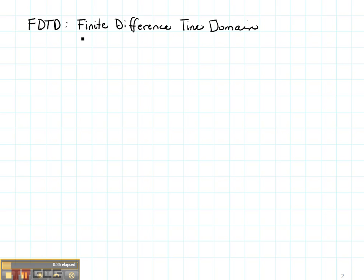The FDTD method is based on two major concepts. One is the finite difference concept and the other is the time domain concept. Let's first examine the finite difference concept.